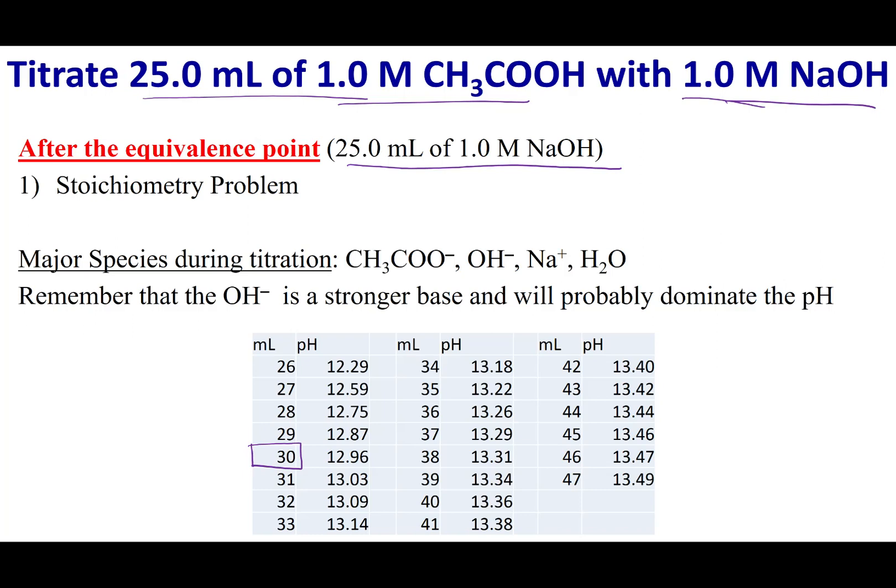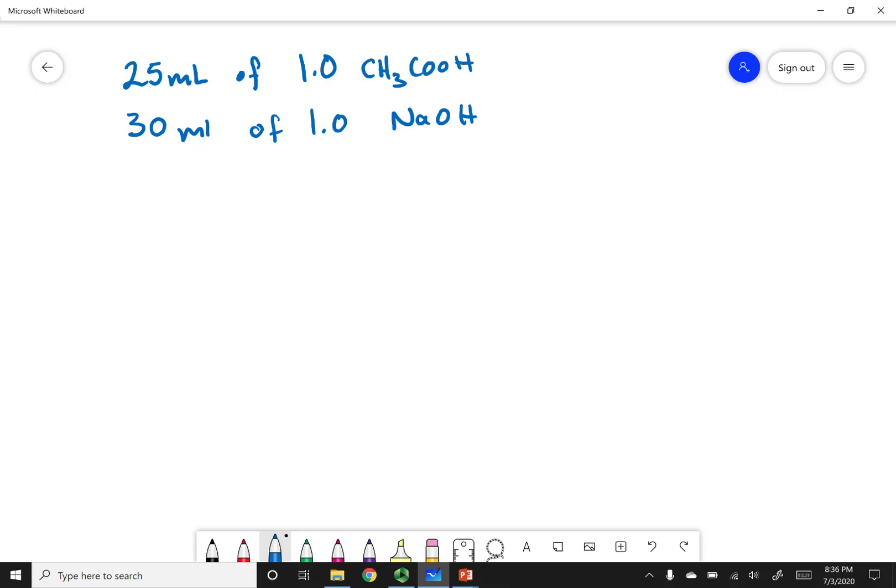Now, for after the equivalence point, this is only a one-part problem. This is only a stoichiometric problem, and so that means we are just doing a SURF table. So let's go ahead and run this SURF table out. Alright, gentle people, this is what we're going to do.